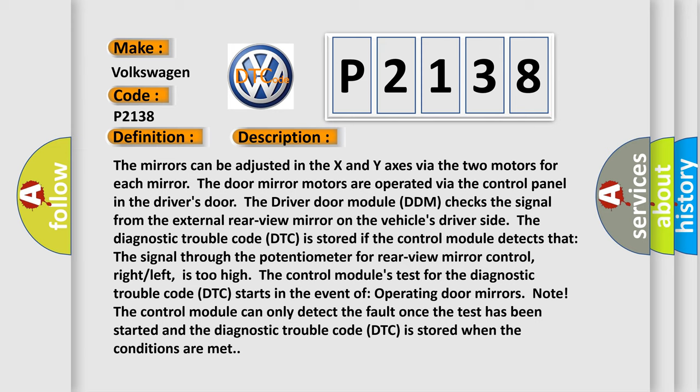The diagnostic trouble code (DTC) is stored if the control module detects that the signal through the potentiometer for rear view mirror control, right left, is too high. This is where the control module's test for the DTC starts in the event of operating door mirrors. Note: The control module can only detect the fault once the test has been started and the DTC is stored when the conditions are met.